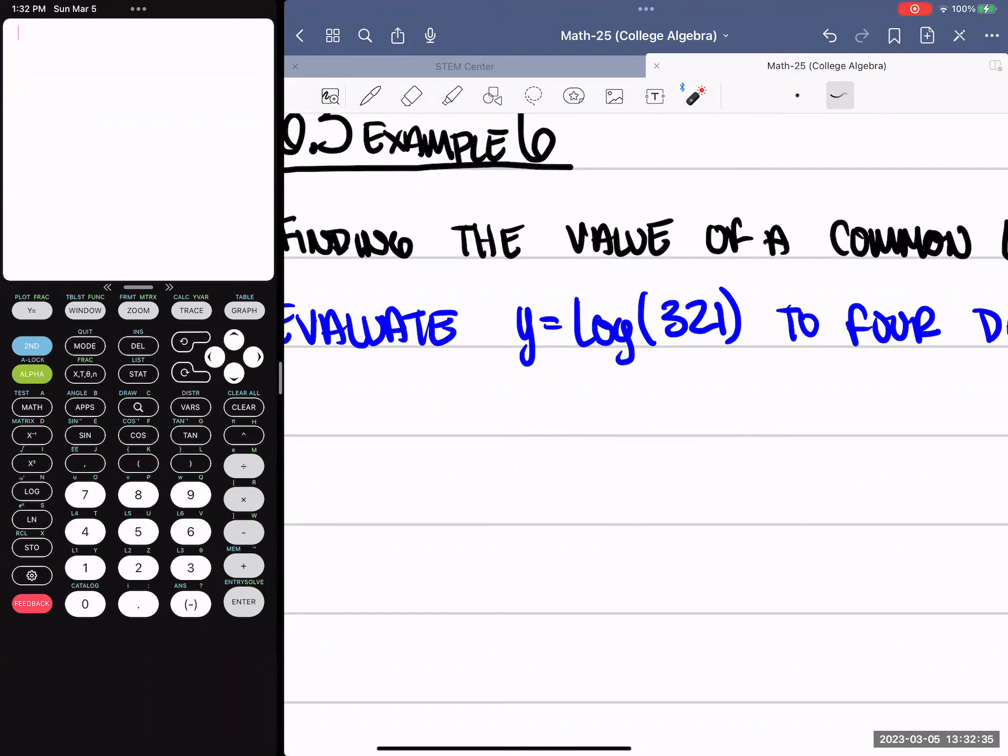Now if you look over here on the calculator, we have a log button, kind of halfway through on the left side of the calculator. Press it a couple of times. So log, and we just type in what we have there of 321.